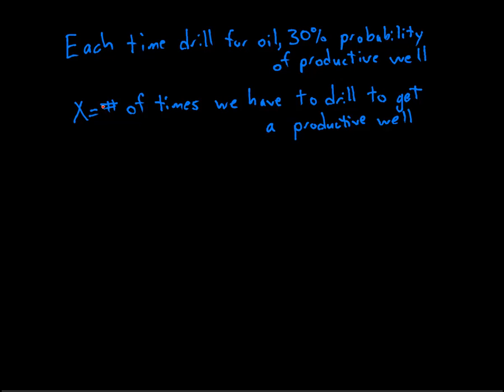So X is some positive integer, and it could really be any positive integer, at least within theoretical bounds. Within realistic bounds it couldn't be bigger than say a thousand, because after you drill a thousand times you're going to go bankrupt and you won't be able to drill anymore. But for the theoretical distribution it's going to be any positive number.